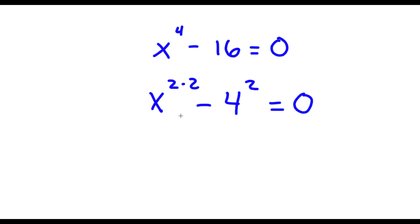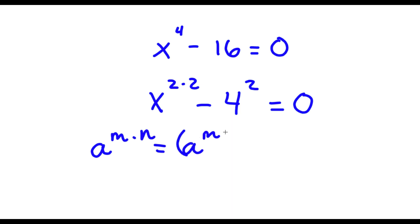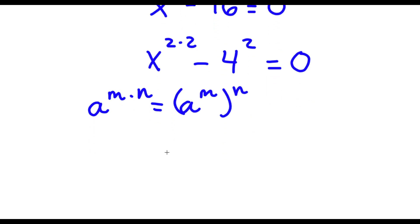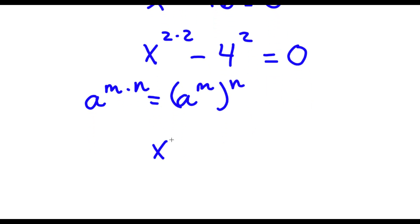Now if I have something in the form a to the power of m times n, this is equal to a to the power of m to the power of n. So x to the power of 2 times 2, I'm going to write as x to the power of 2 to the power of 2.